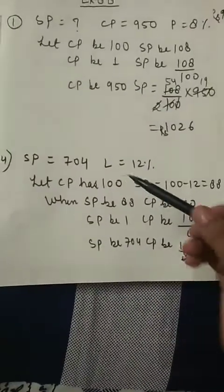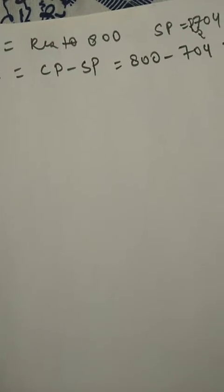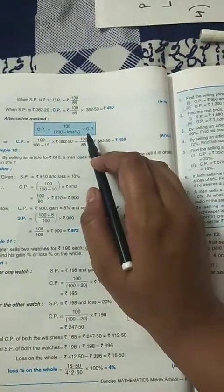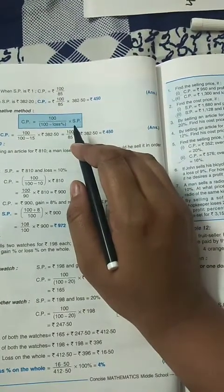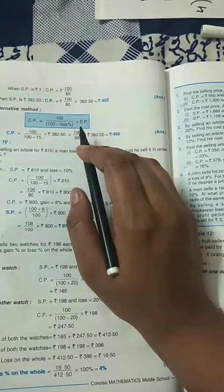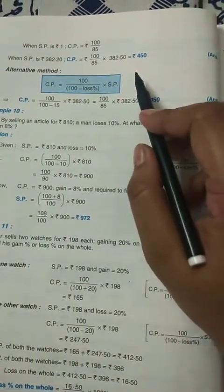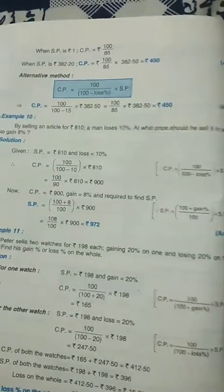That was question number four from exercise 8B. You can also solve this using the alternative formula given in the book, but we are using the unitary method because it is easy and you don't have to memorize formulas. The formula method is useful to learn formulas, but the unitary method works without them.